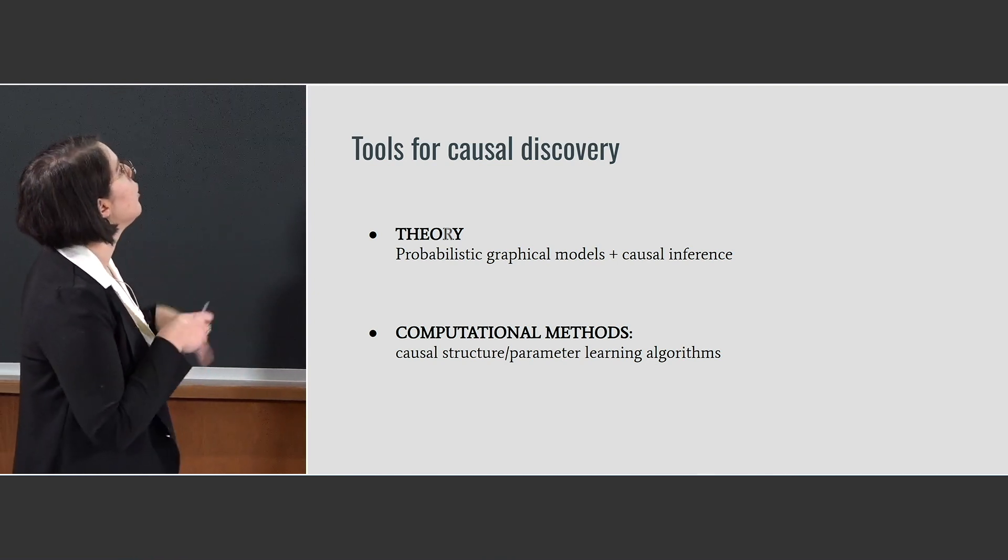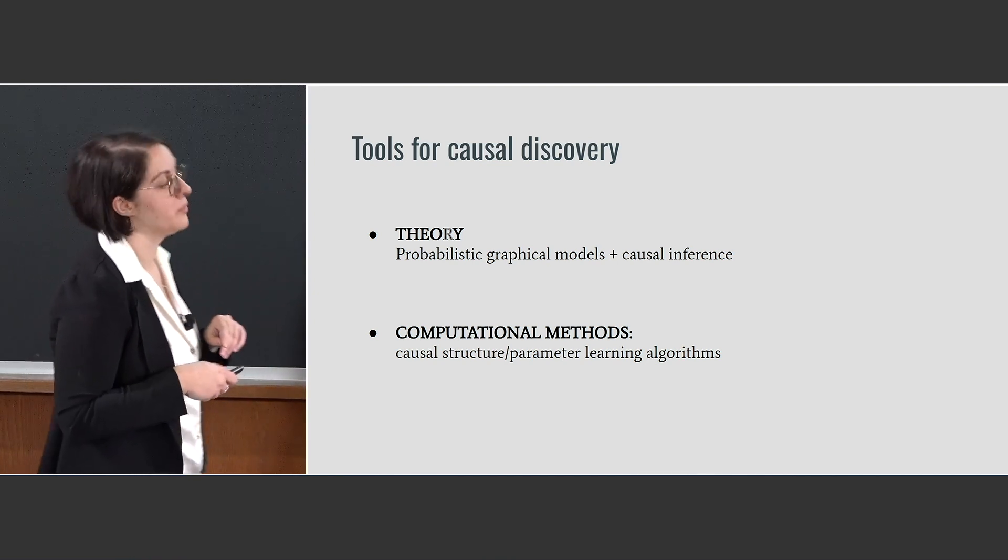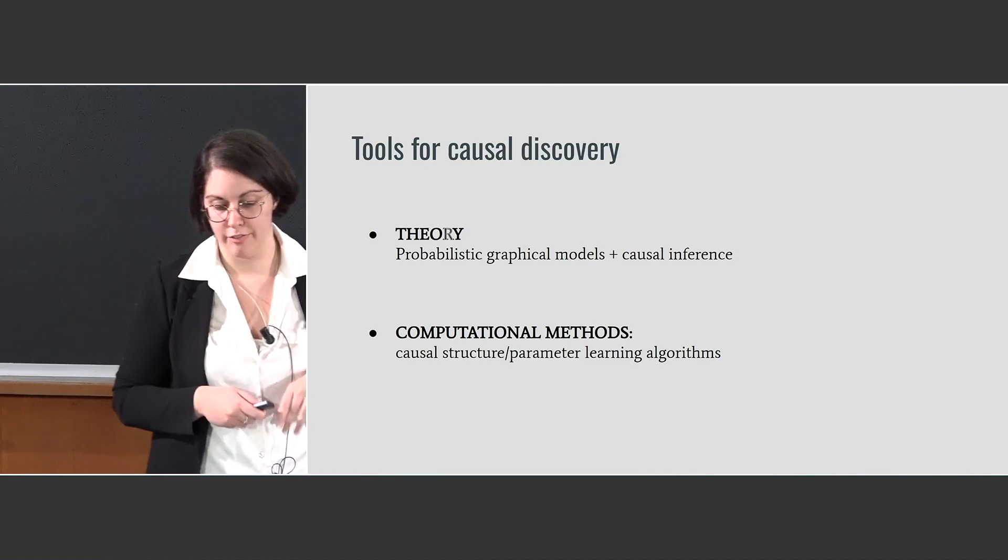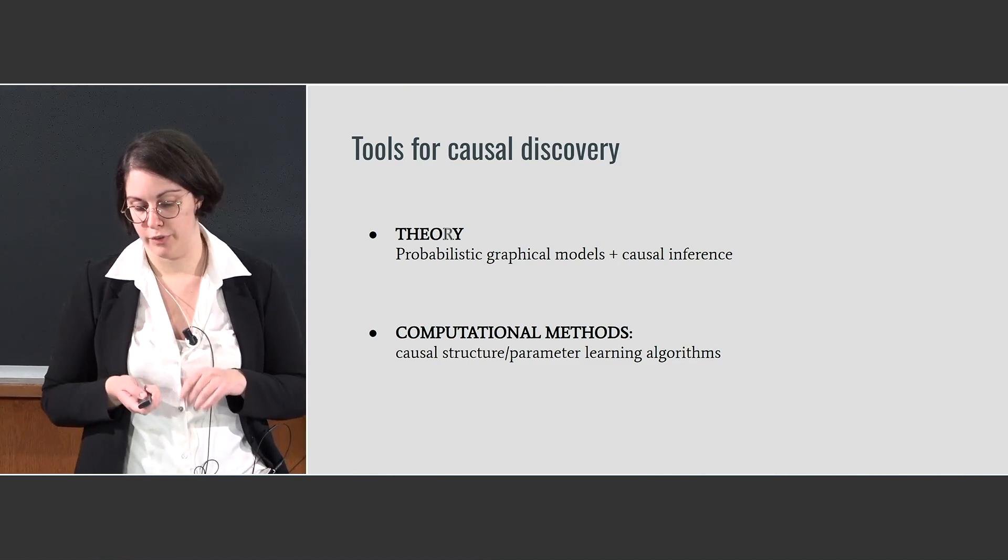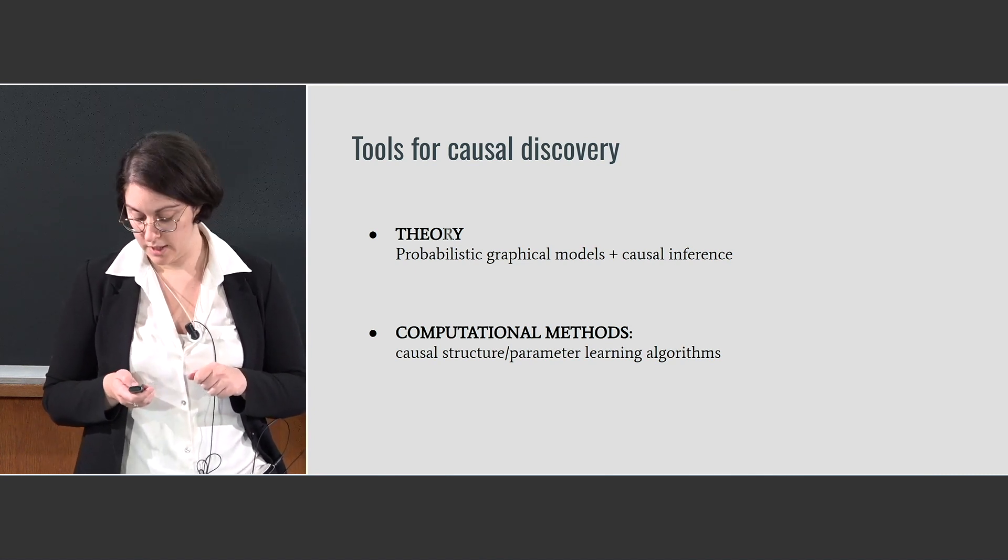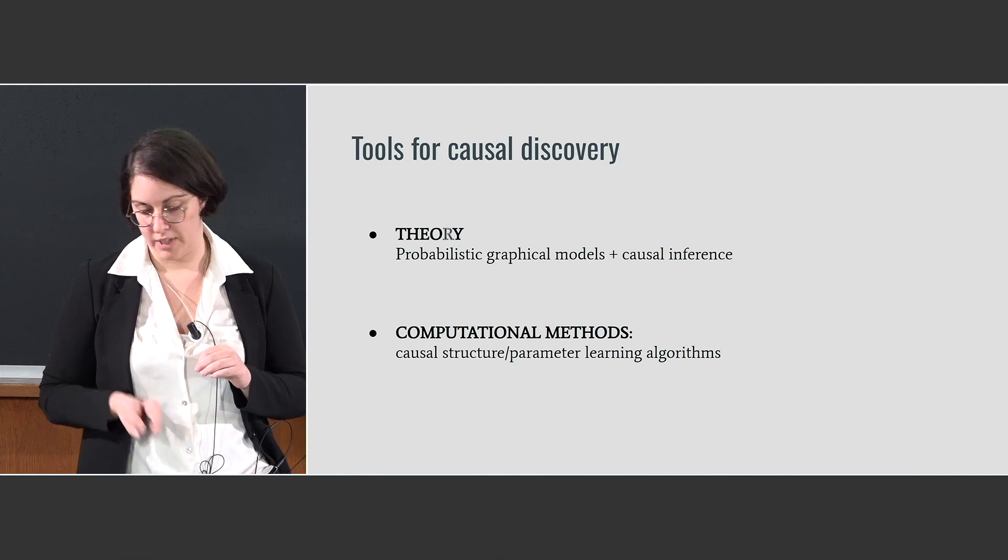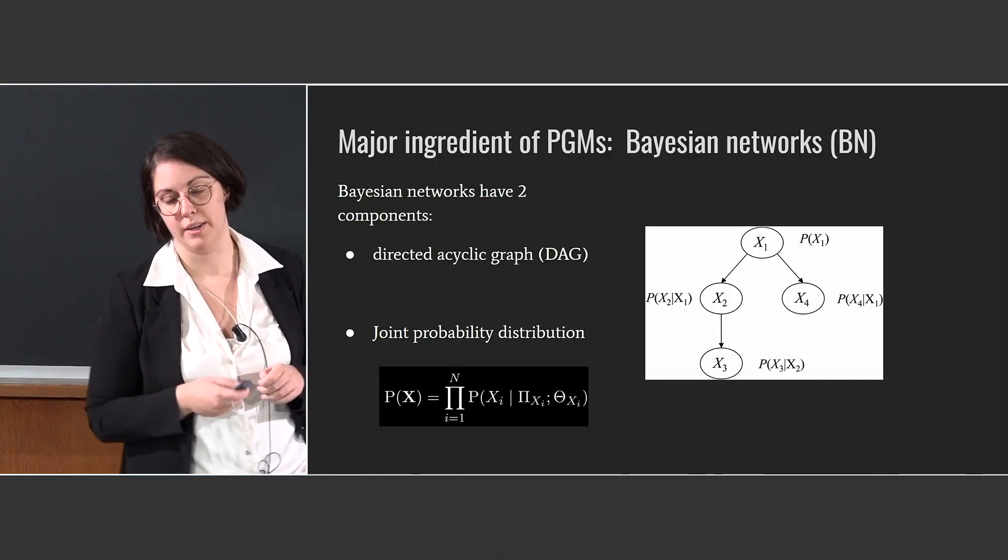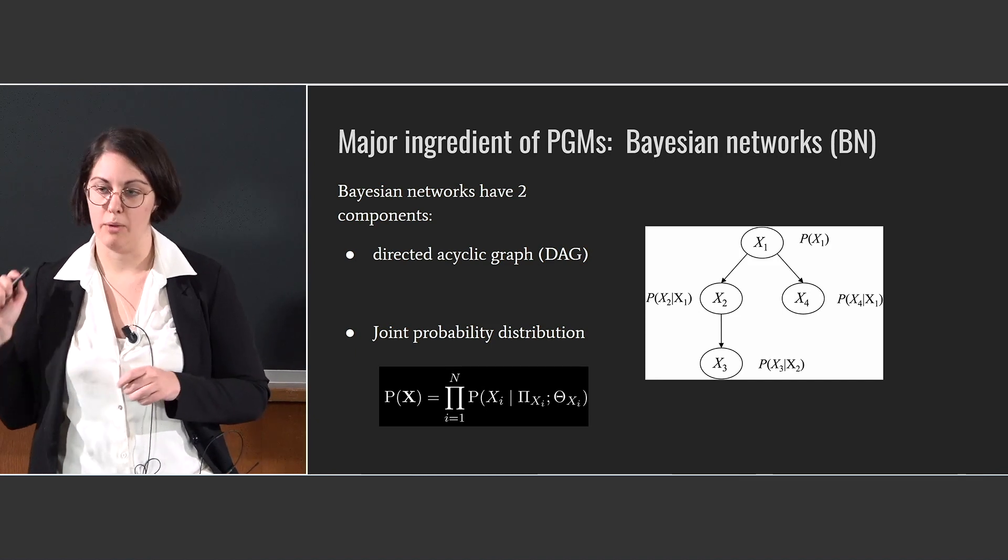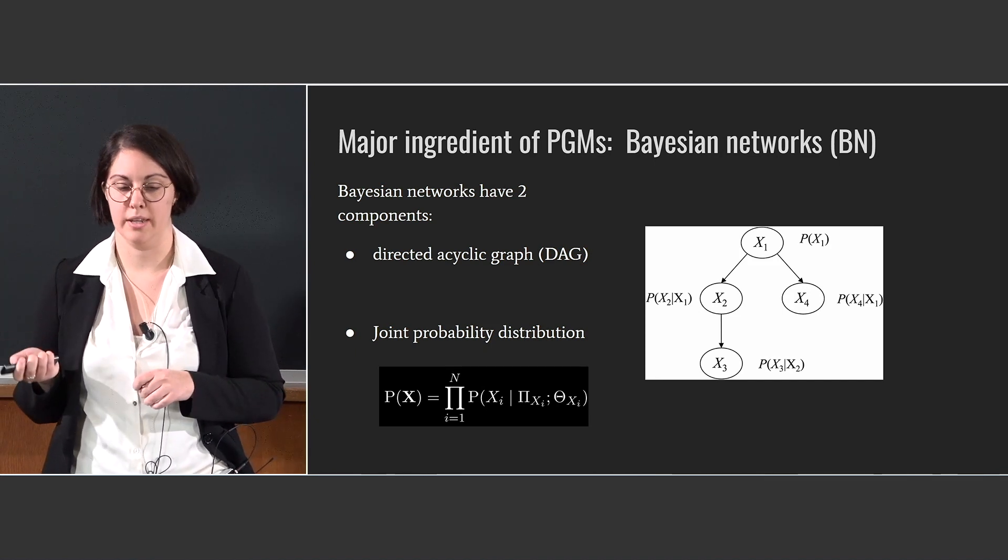So the tools for causal discovery can be divided in theory and computational methods. We use the theoretical foundation of graphical models and causal inference, and as methods for causal discovery, we use causal structure learning algorithms. In particular, there are two types of algorithms, causal structure learning and causal parameter learning for the parameter inference of the model.